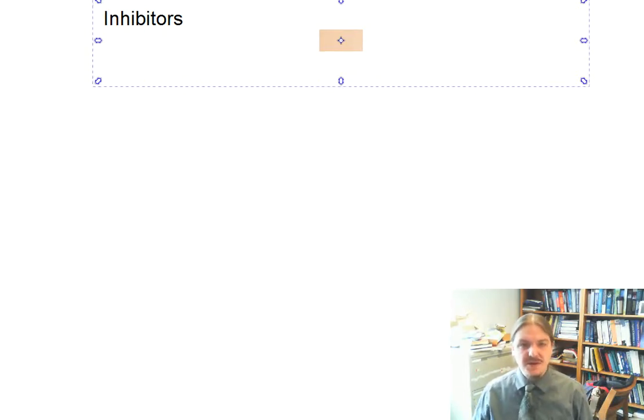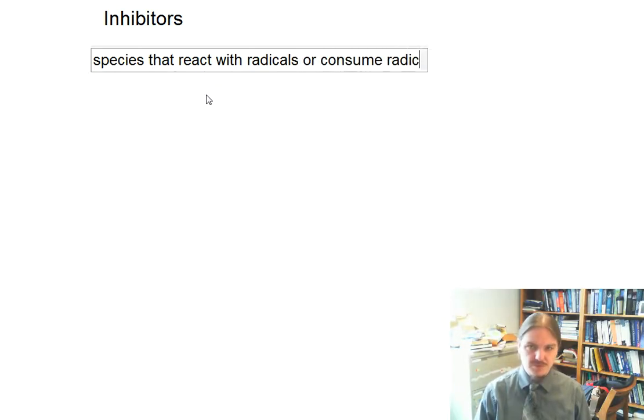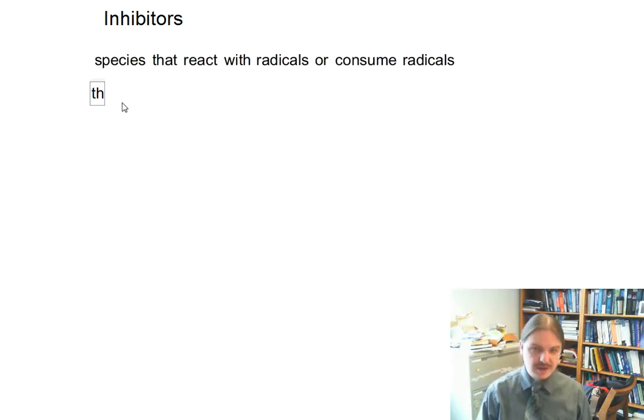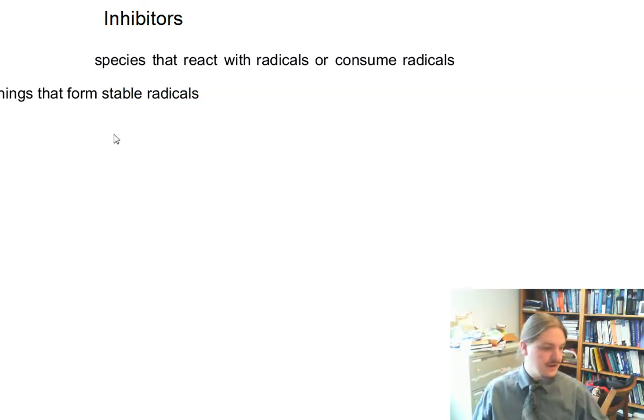Hello. In this video we're going to talk about radical inhibitors. Inhibitors are species that react with radicals or consume radicals. These are generally things that form stable radicals within the context of the reaction that we're doing.